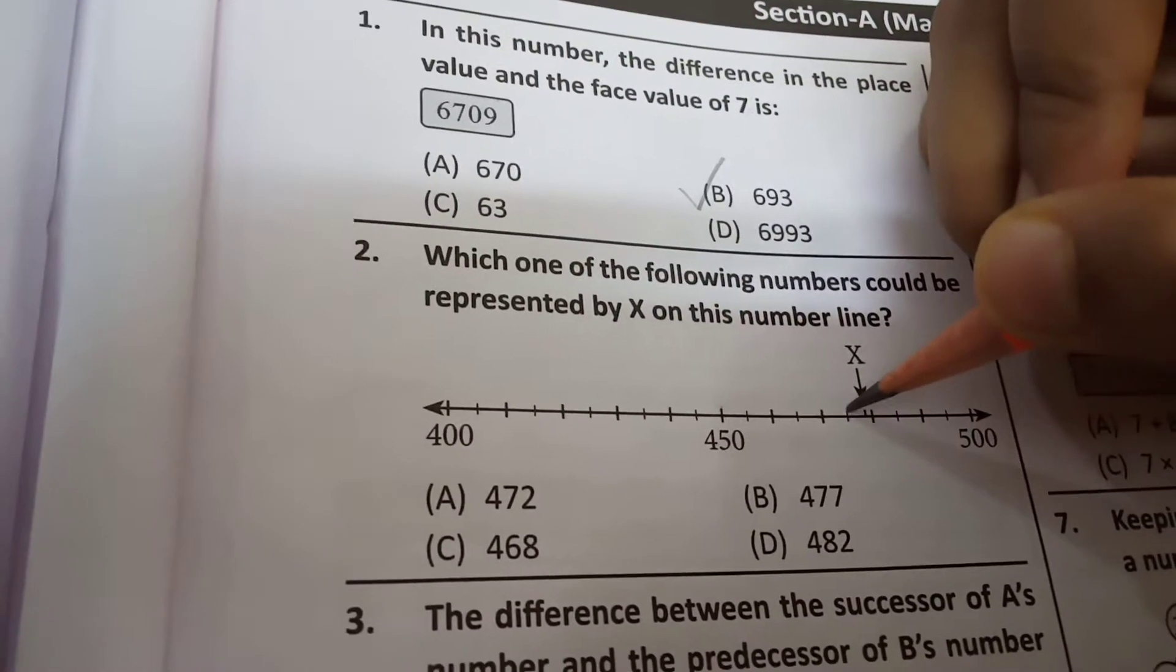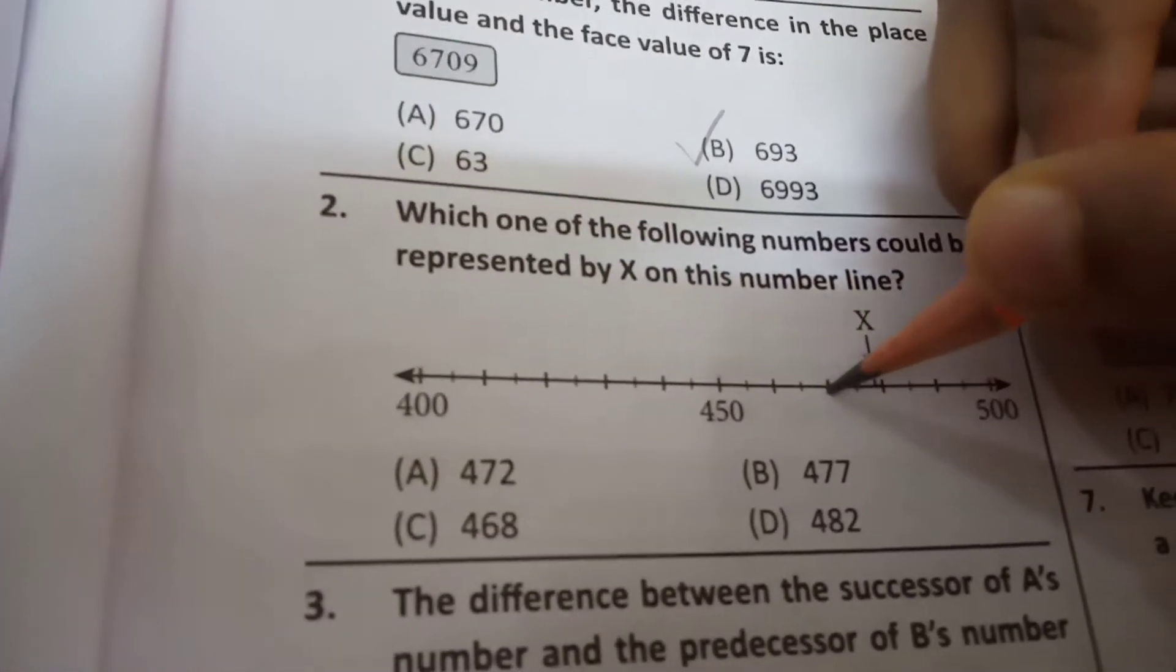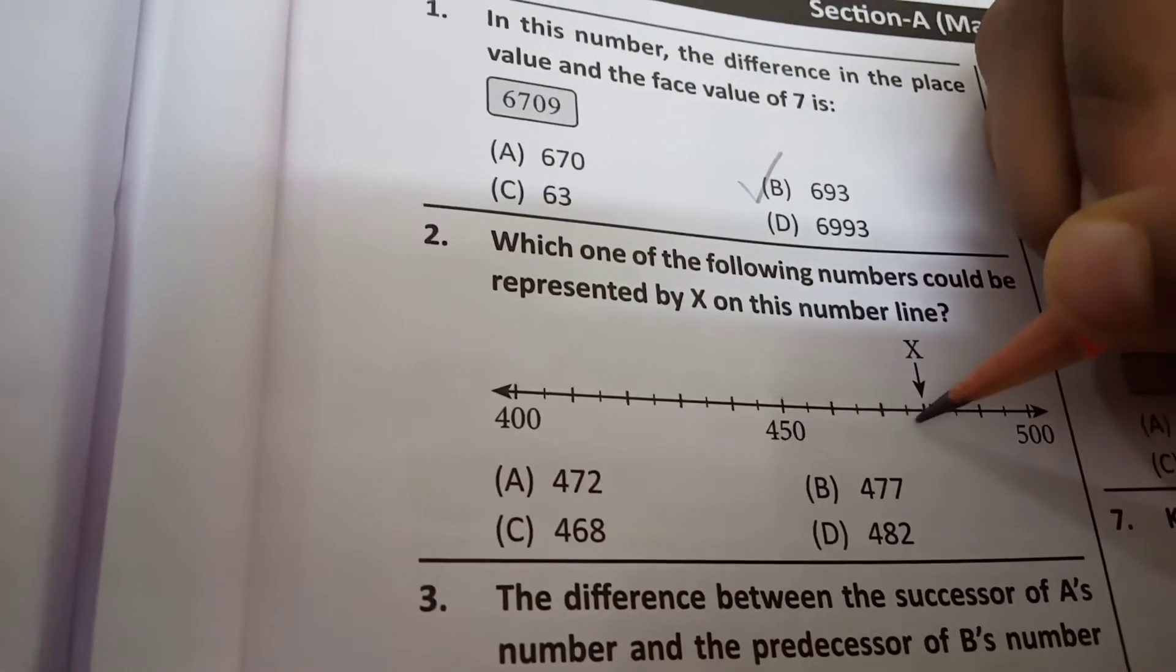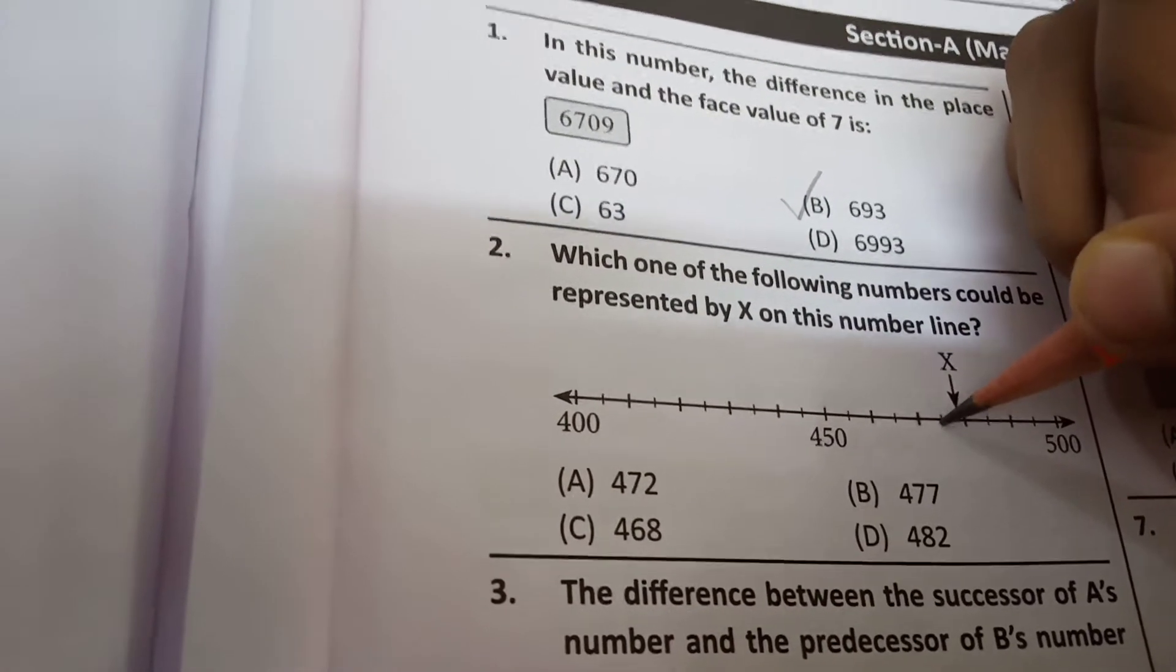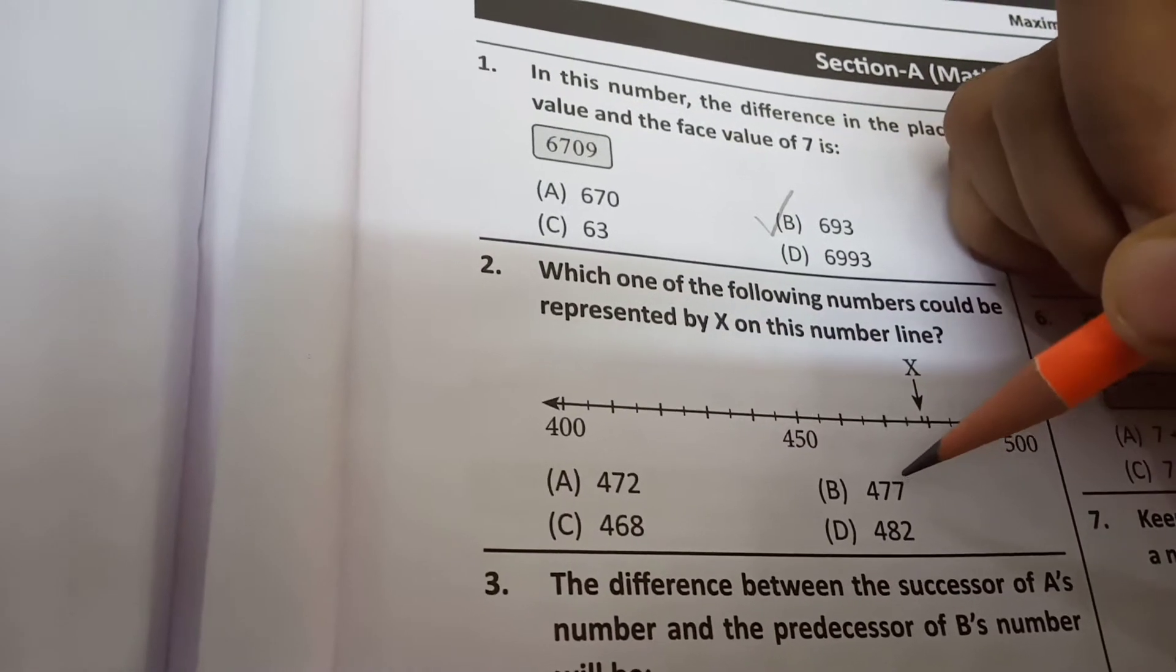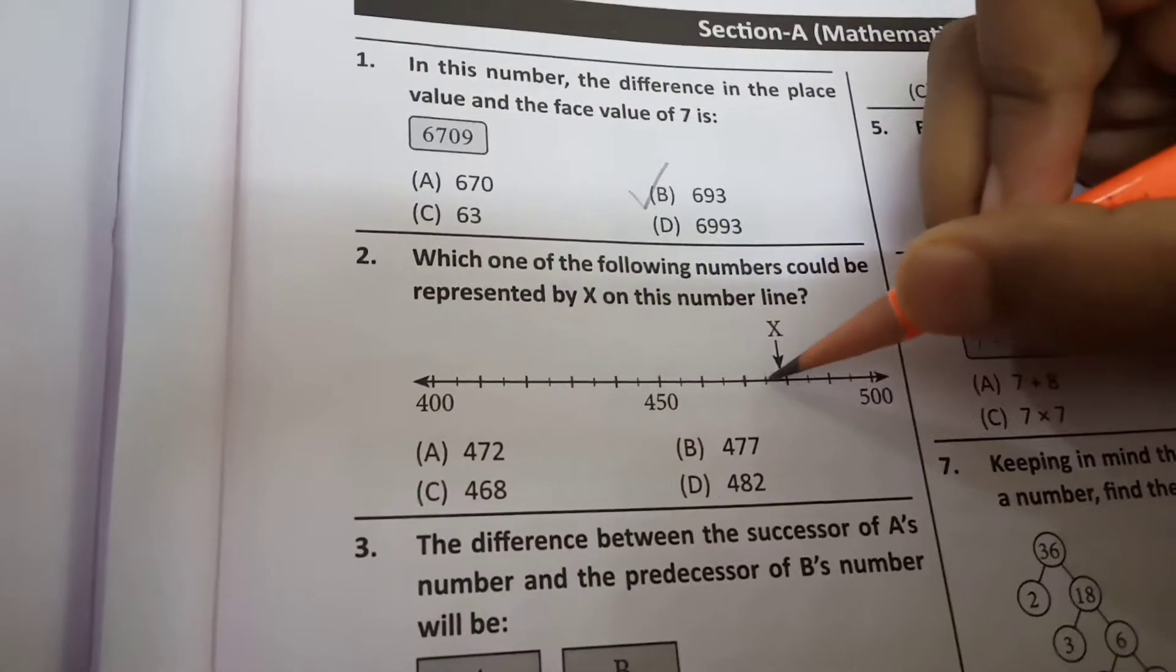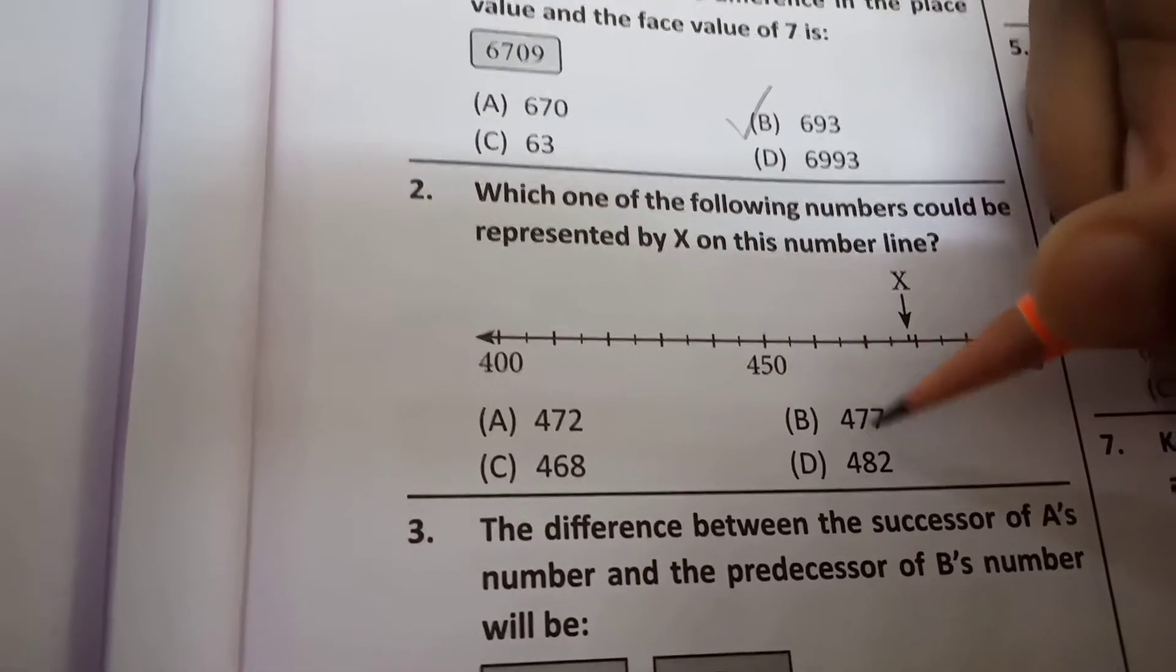And these small lines, so 5 more than this line just before it. So this shows 70. So this shows 5 more than 70. So 75. So x is somewhere between 475 and 480. We need to find a number that goes between 470 and 480. But here we need to find something after 475. So 477 goes after 475, so B.